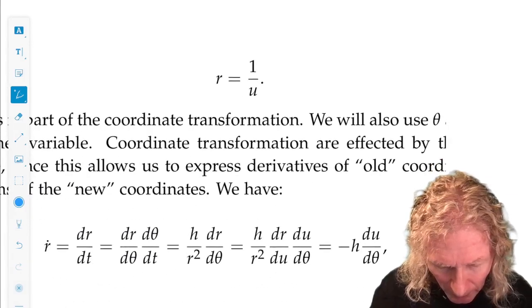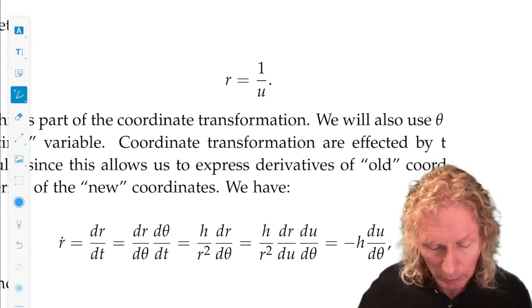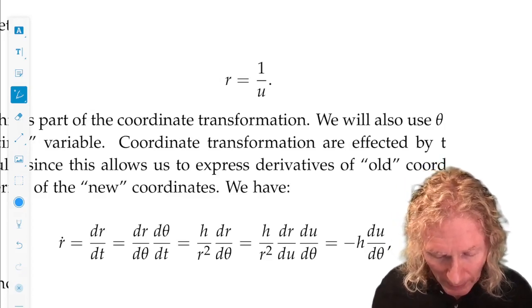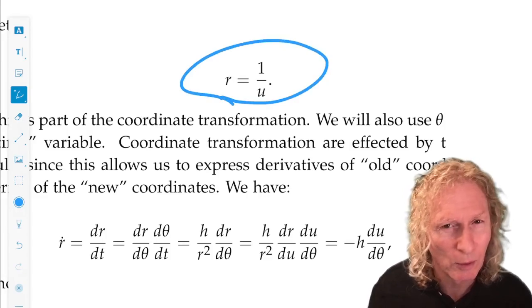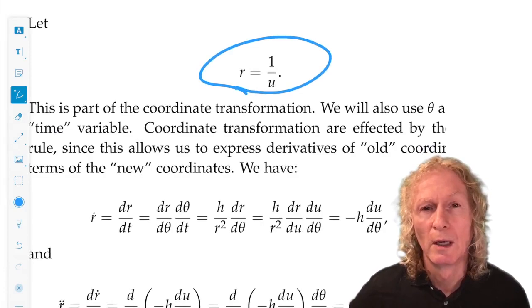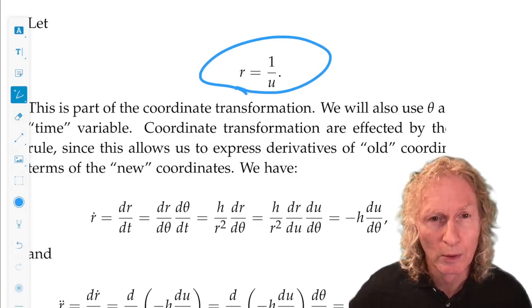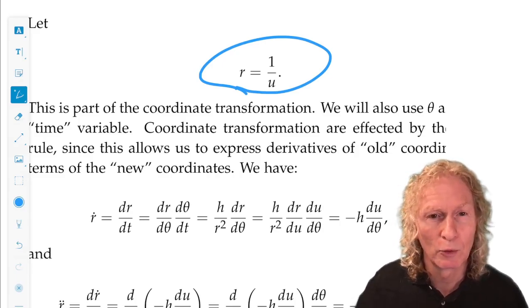Now we're going to do something else. With that same equation, the equation for r double dot, that looks a bit weird at first, but it gives us quite a remarkable result. We're going to change variables. We're going to let r equal 1 over u. We're going to differentiate that once and twice.